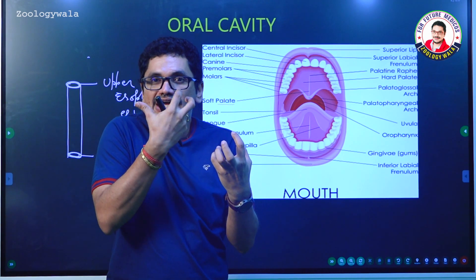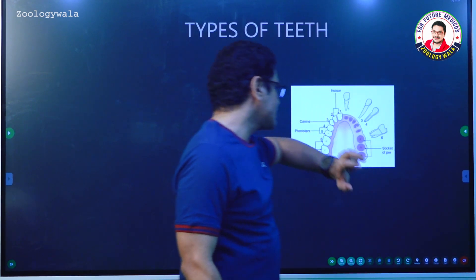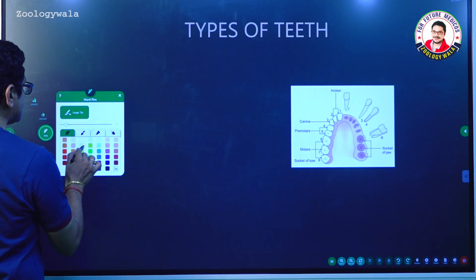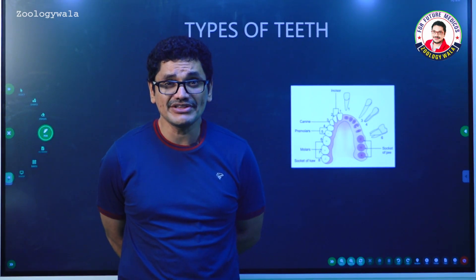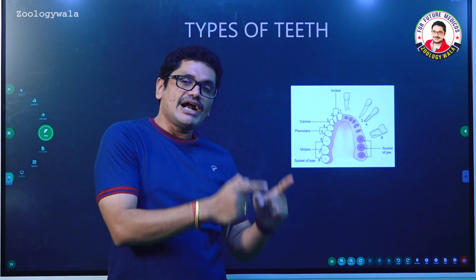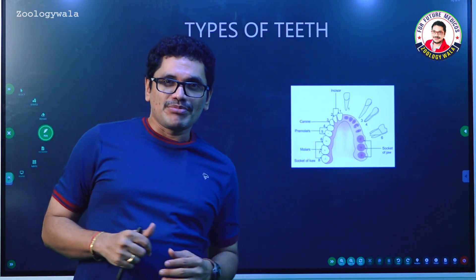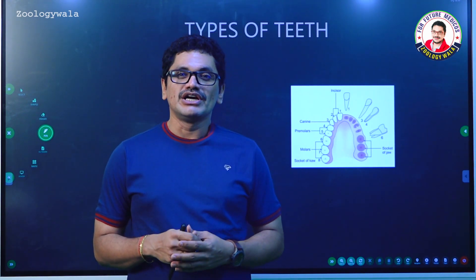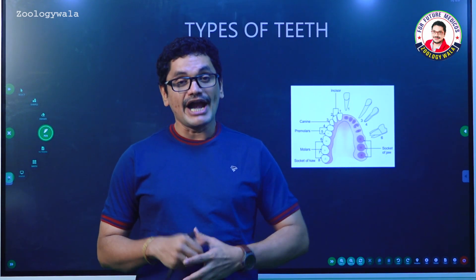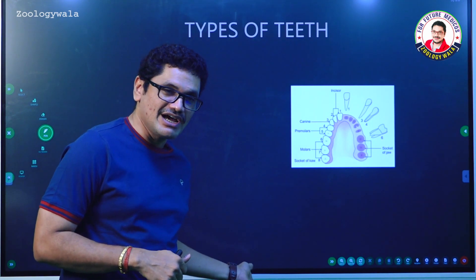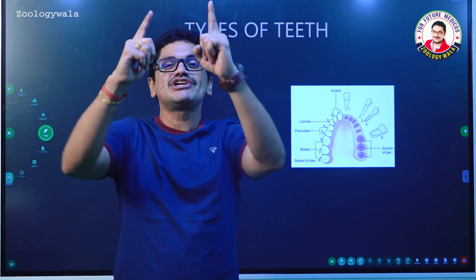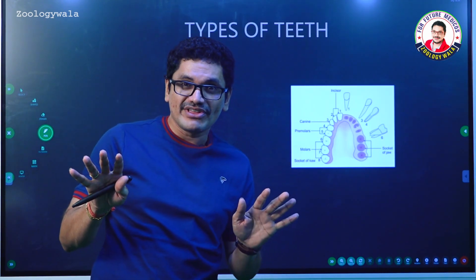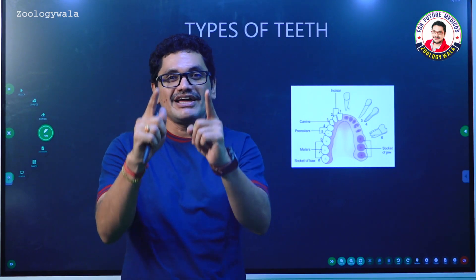In the oral cavity, important components include teeth. We will look at how many teeth are present in adults versus young ones, which animal has the maximum number of teeth, which has the minimum, what types of teeth are present, how many times teeth are replaced, and whether any animal has no teeth. All this will be covered in the next video.